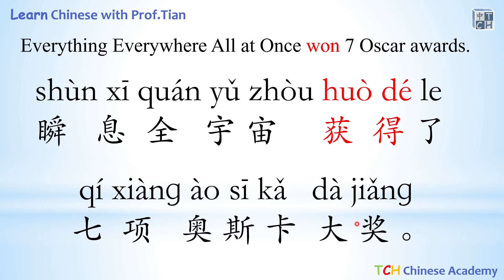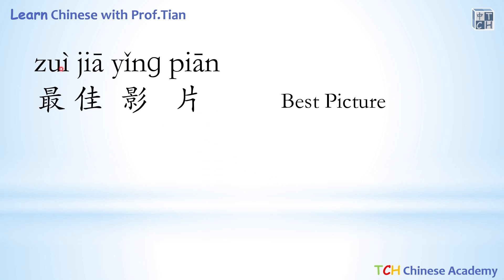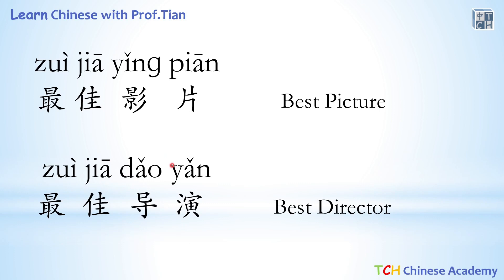瞬息全宇宙获得了七项奥斯卡大奖. Now let's see what they are. The first one is best picture — 最佳影片. 最 means most, and 佳 means good, so the most good — that's best. And 影片 is picture. So 最佳影片. And here we have best director — 最佳导演.